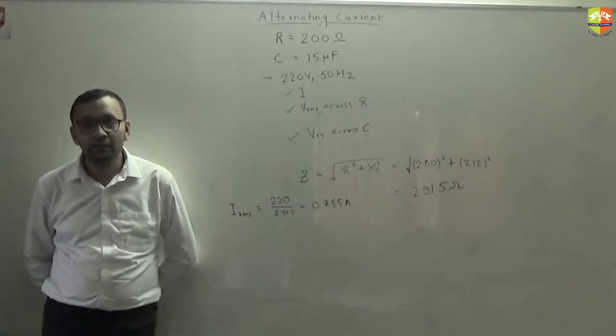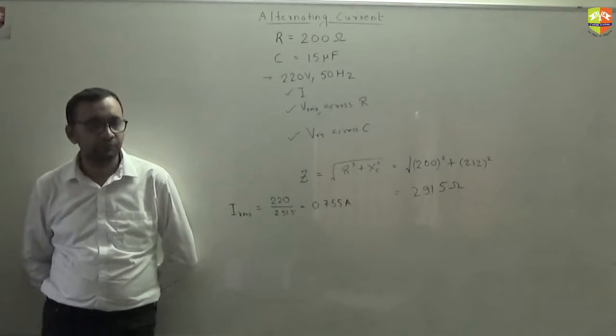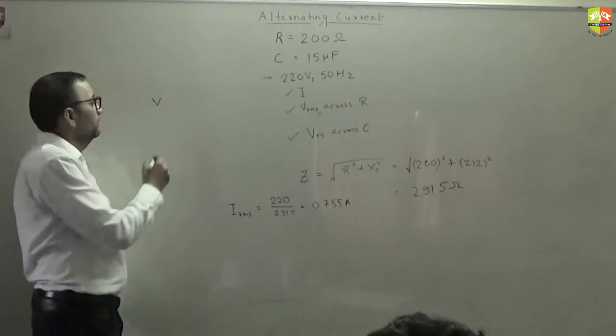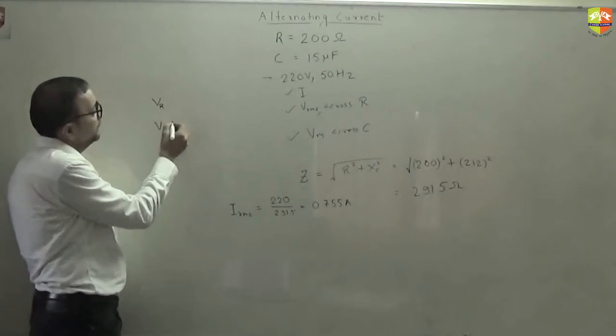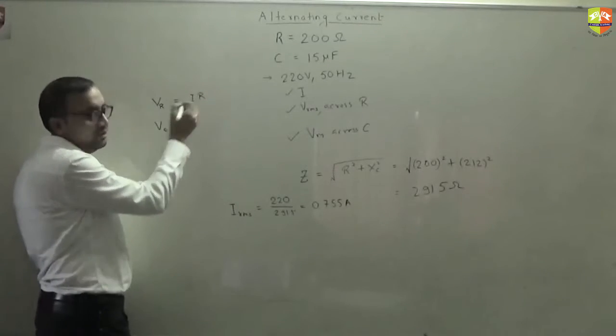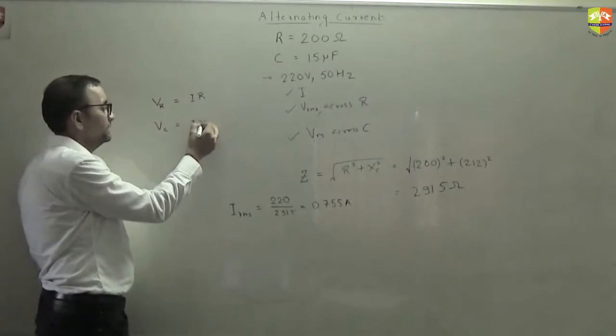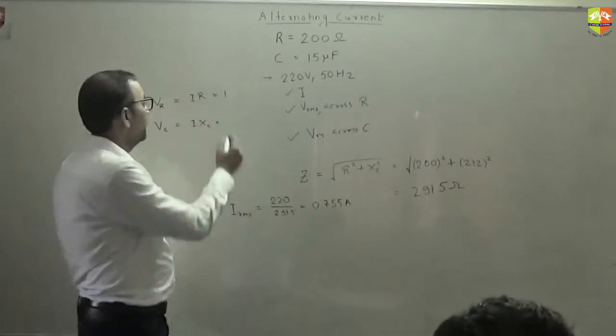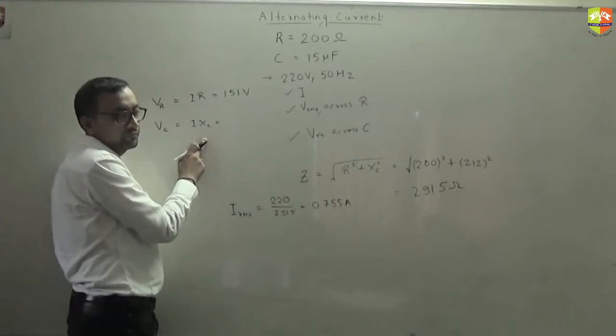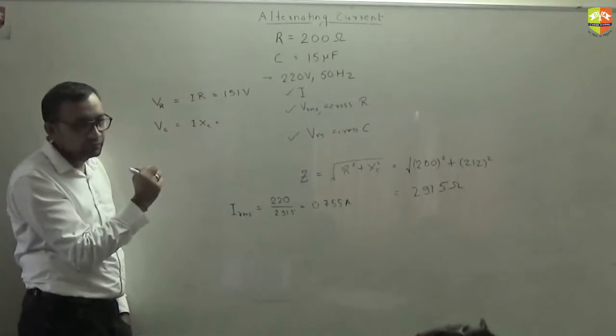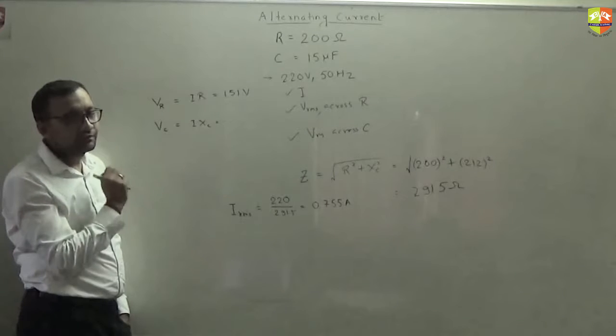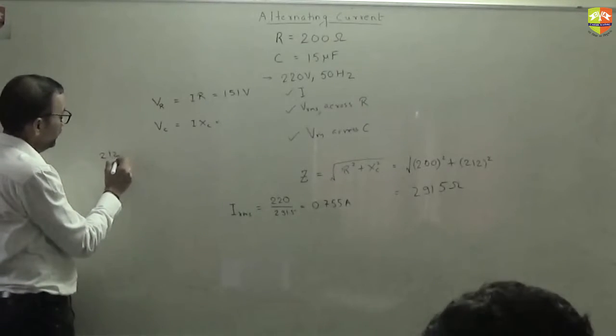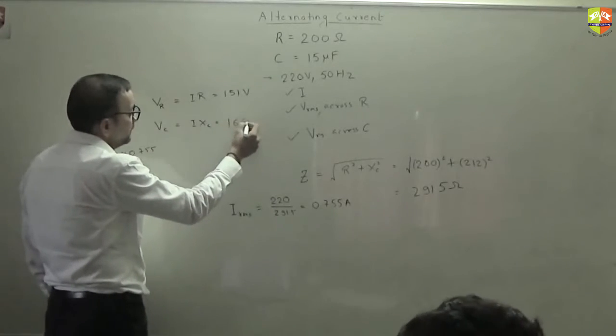Now get the value of voltage across resistance and across capacitance. Did you get V_R and V_C? V_R and V_C. How much is that? V_R is simply I into R. V_C is what? I into X_C. How much is that? V_R is 151 volts. V_C is? X_C again, right? X_C is 212. And current is this? What is V_C? 212 into 0.754. 160.